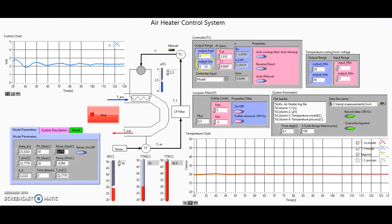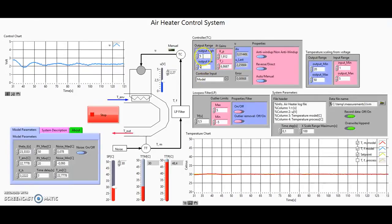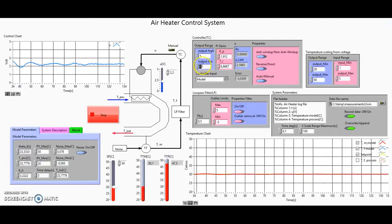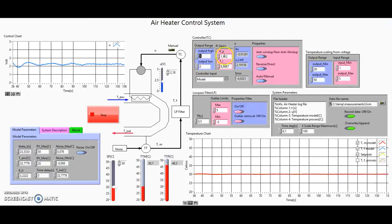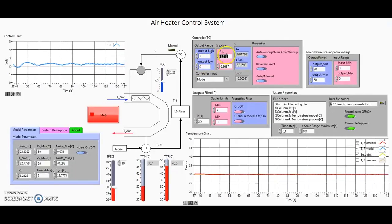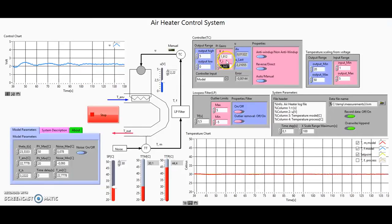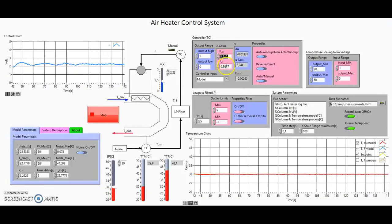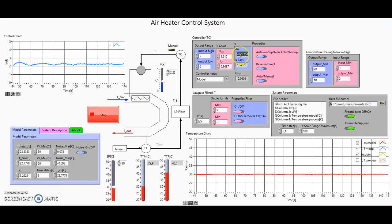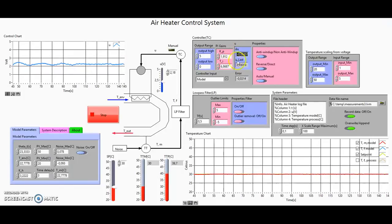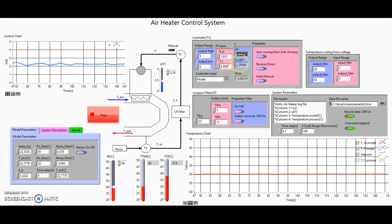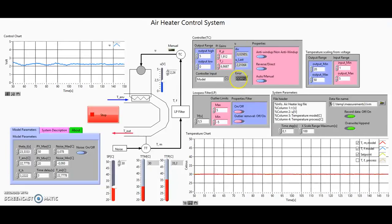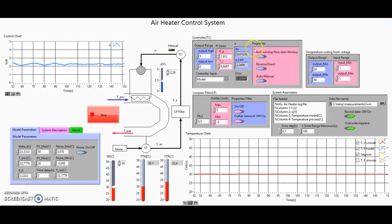Next we have the controller. Here you can set the maximum output of the control signal. Here are the gains, also estimated using the brute-force algorithm in MATLAB. Here are the incremental control value, the last calculated control value, and the error.